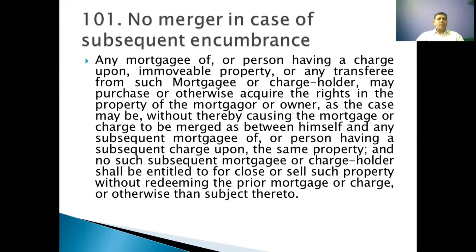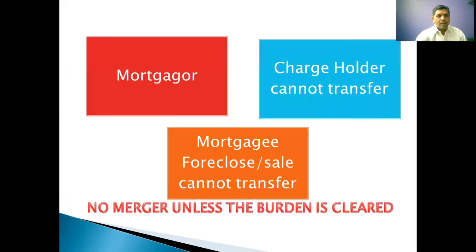Now let us understand this by way of a slideshow. A mortgagor can mortgage his property, and the person who is holding the property becomes a mortgagee. Unless the mortgagor within the time frame clears the mortgage — that is, redeems his property — when the mortgagor redeems his property, he has the absolute right of selling the property. If the mortgagor fails to redeem the property within the time frame, the mortgagee gets the right of foreclosure or sale. Unless the mortgagee does not go in accordance with law — that is, he does not foreclose or sell — he cannot transfer the property.